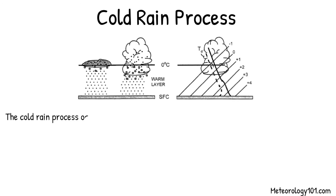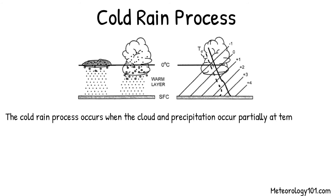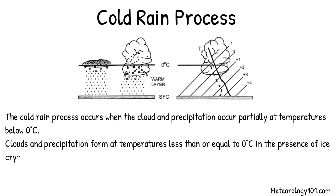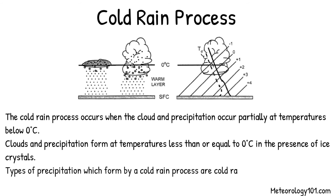The cold rain process occurs when the cloud and precipitation occur partially at temperatures below 0 degrees Celsius. Clouds and precipitation form at temperatures less than or equal to 0 degrees Celsius in the presence of ice crystals. Types of precipitation which form by a cold rain process are cold rain, snow, ice pellets, freezing rain, and hail.